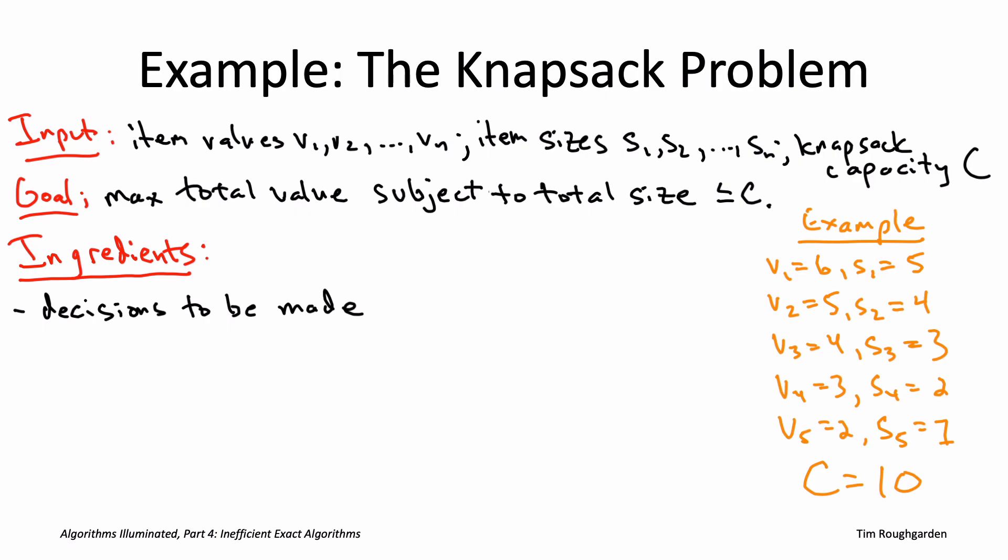A very convenient way to numerically encode binary decisions is as 0,1 variables. We're going to use xi to denote 1 if i is included in the subset, and 0 if i is excluded from the subset.